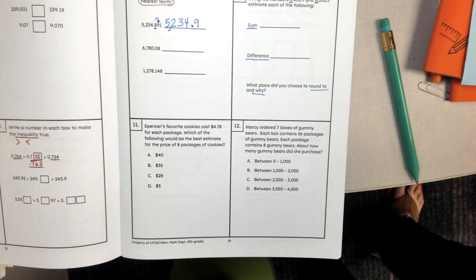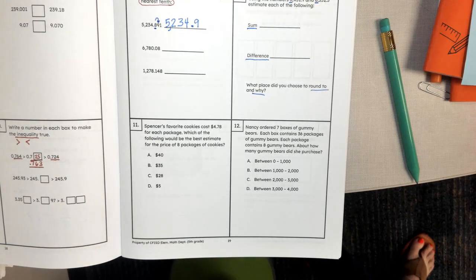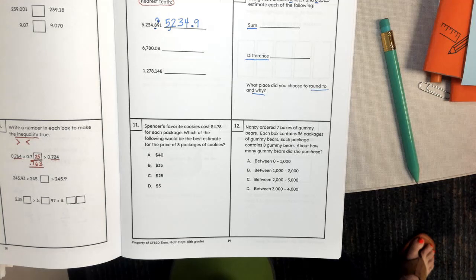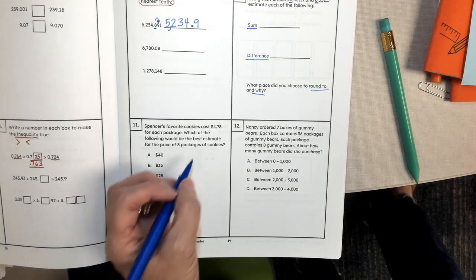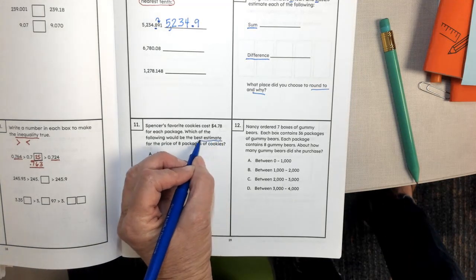This help is for number eleven. Spencer's favorite cookies cost four dollars and 78 cents for each package. Which of the following would be best estimate for the price of eight packages? So again we're looking for the best estimate.